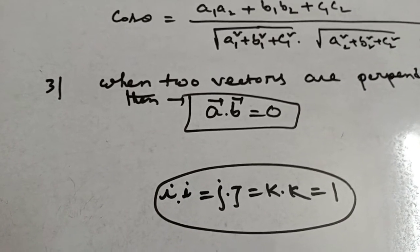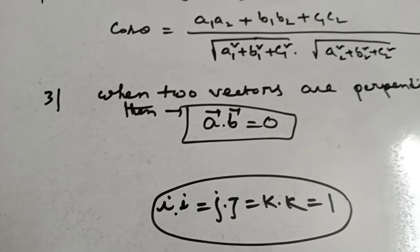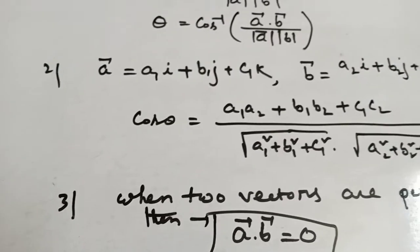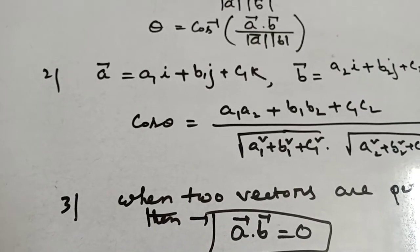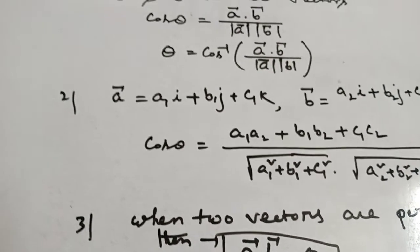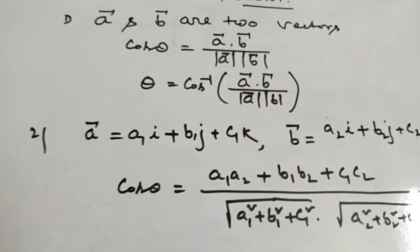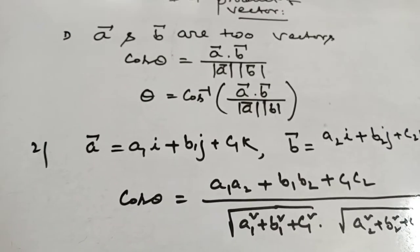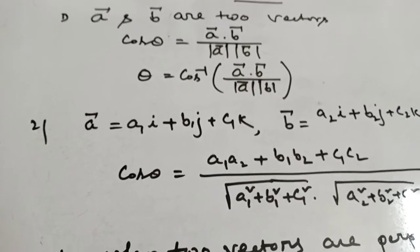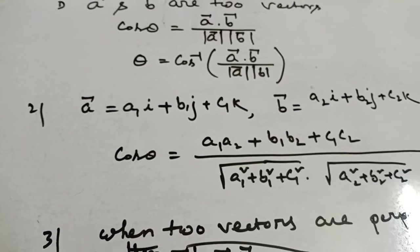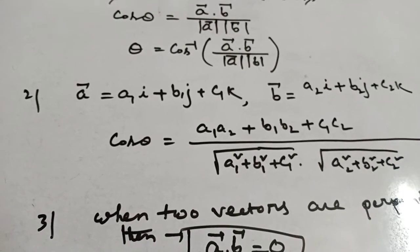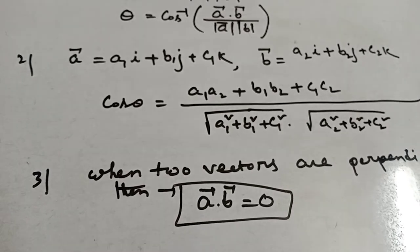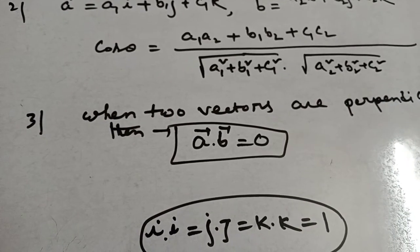This is the most important formula of dot product of vectors. In the next class, I will start the angle between two vectors, and on the basis of angle between two vectors, find the unknown ratio when two vectors are perpendicular to each other.